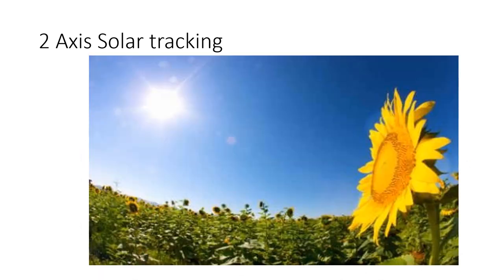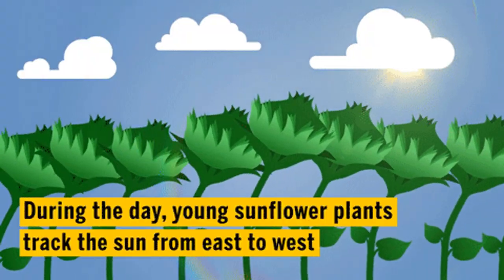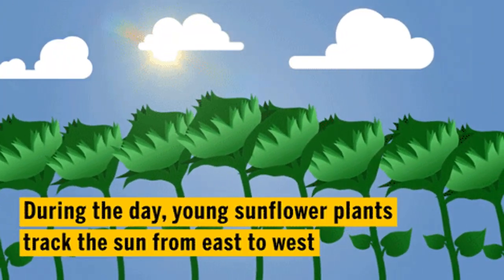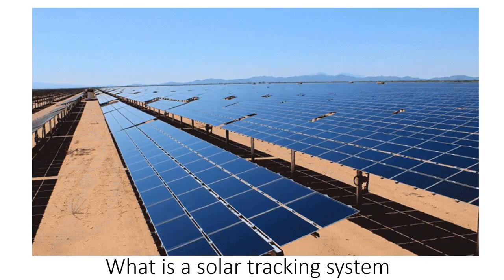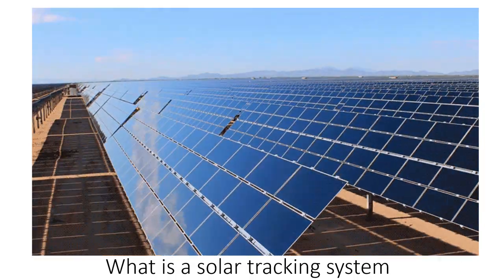The idea of solar tracker emerged from nature, i.e. sunflowers. During the day, sunflower plants actually track the sun from east to west. A solar tracker is a device that orients the solar panel towards the sun.